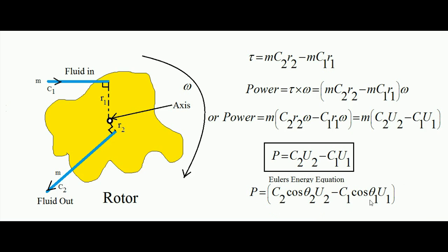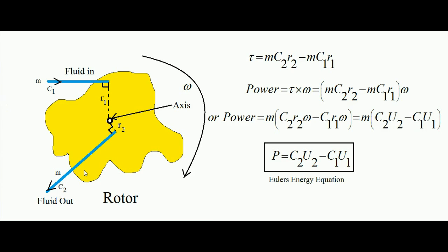So Euler's energy equation states that when a fluid interacts with the rotor of a turbo machine, the rate of change of angular momentum of the interacting fluid equals the developed torque on the rotor, and multiplying the torque by the angular frequency gives the power. This is Euler's energy equation. Thank you.